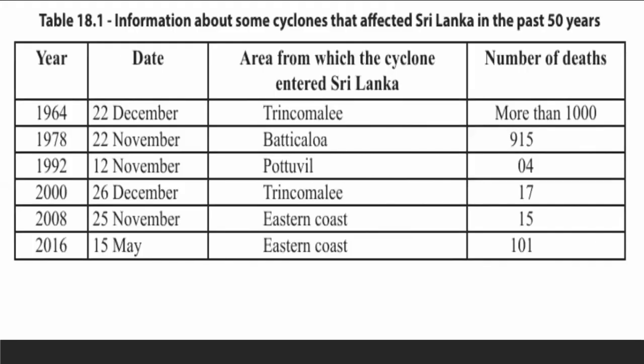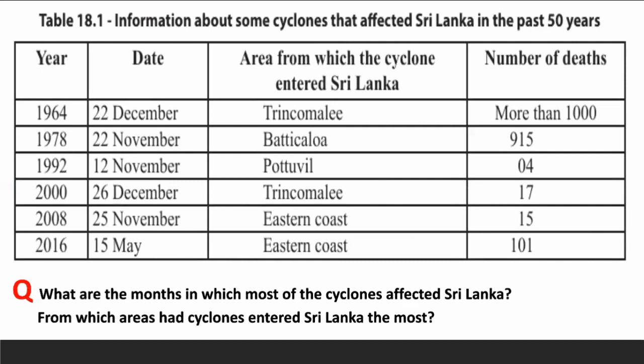This table gives information about cyclones that affected Sri Lanka in the past 50 years. Most of the cyclones that affected Sri Lanka occurred in November and December and they entered Sri Lanka from the eastern coast. In 1978, the death toll due to cyclones was 915. However, since warnings could be given because of the development of technology, the number of deaths has been reduced in subsequent years.